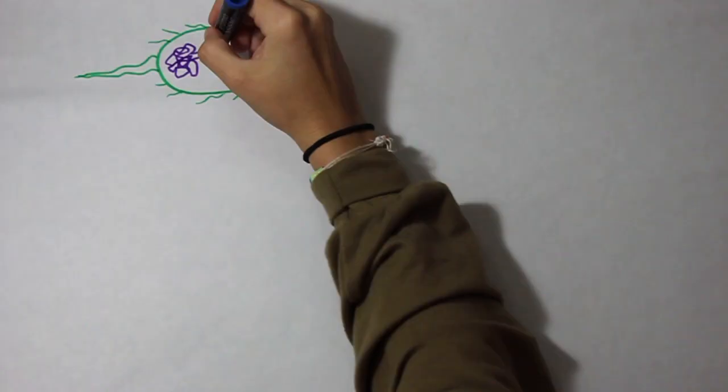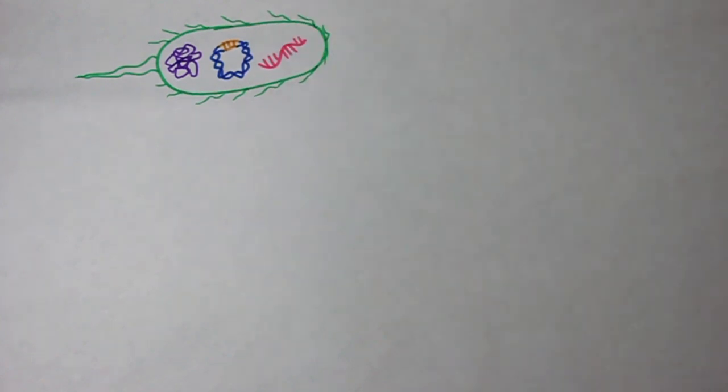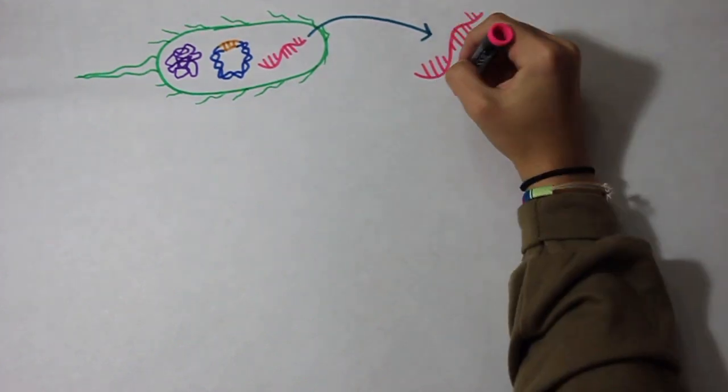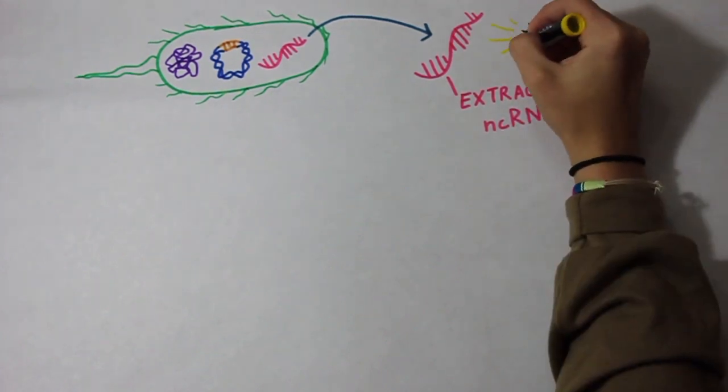Our next step is to extract the non-coding RNA, which is already present in the E. coli cells due to them undergoing transcription during growth. Once pure non-coding RNA is obtained through extraction, we can then visualize it.